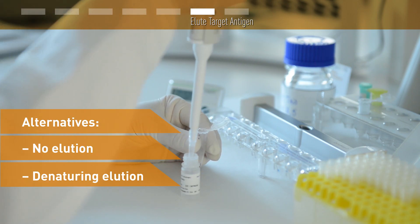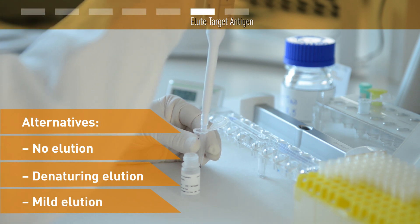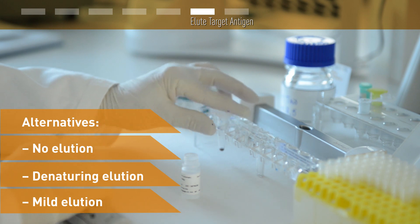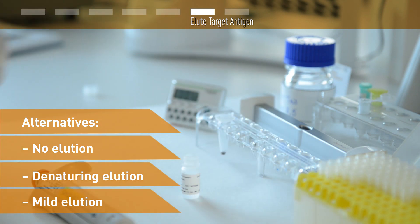If you want to keep full protein integrity, you can elute under milder, non-denaturing conditions. This is typically done by a two-minute incubation at room temperature using low pH or high salt. Don't forget to bring your eluate back to physiological pH after elution.